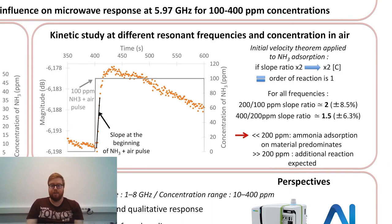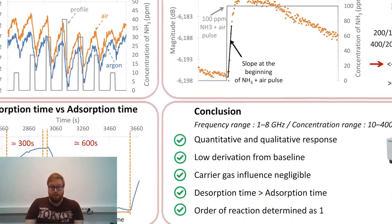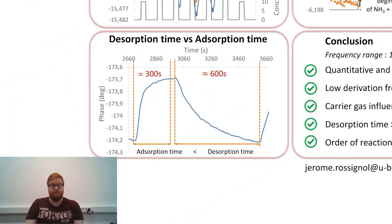A kinetic study was carried out on an experiment with air as carrier gas. Using the initial velocity method, we have demonstrated that the order of reaction of the ammonia adsorption is 1 at low concentration, under 200 ppm. However, it's not the case at higher concentrations. We also observed that the desorption time is 2 times longer than the adsorption time, which indicates chemisorption phenomena.